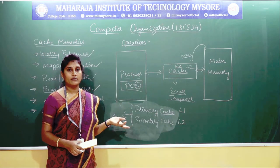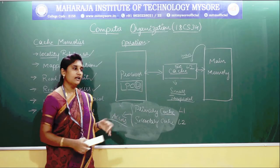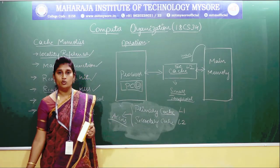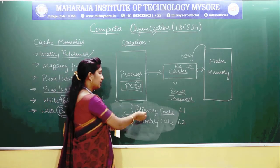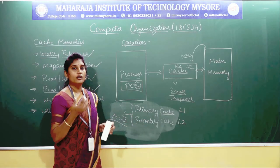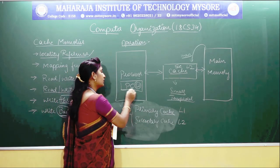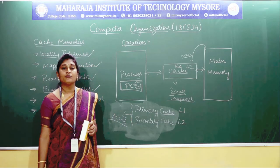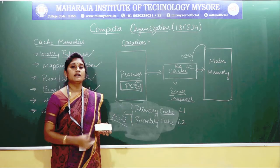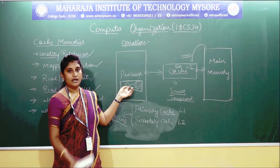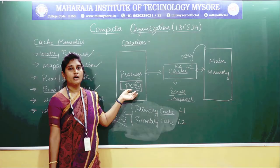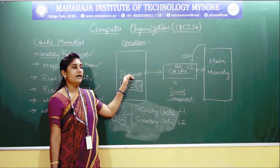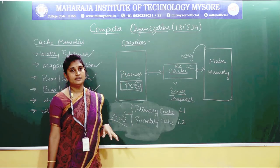Still, if the processor makes a request, I need to go and search the cache memory, and that might still be time consuming. To increase accessing speed further, the cache memories were divided into primary and secondary. In the primary cache, the most frequently and repeatedly used data or instructions will be stored in your level one cache, and that will be embedded in your processor itself.